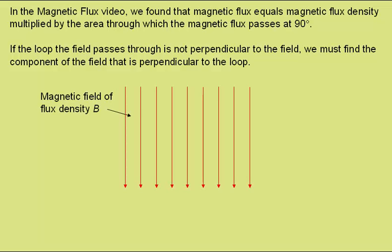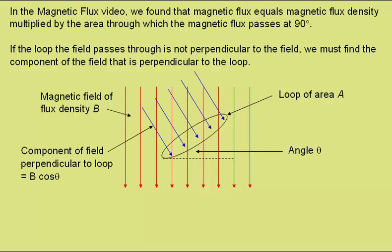Let's illustrate that. Here we have a magnetic field of flux density B and a loop of area A within the field at an angle of theta to that field. This would be the component of the field perpendicular to the loop, and as this angle is theta, the component of this would be B cos theta.